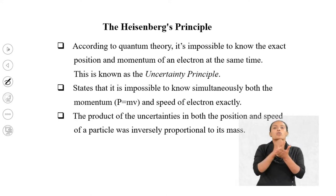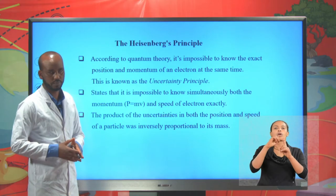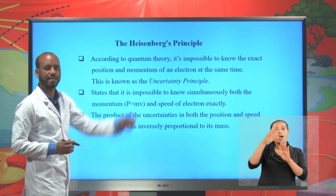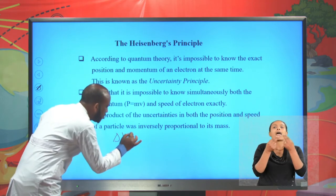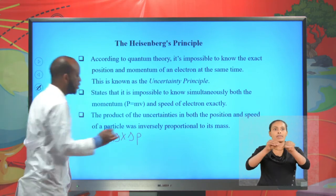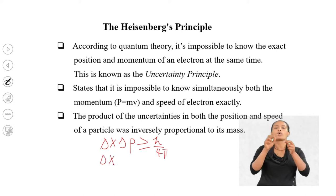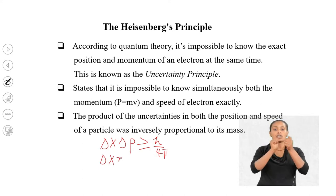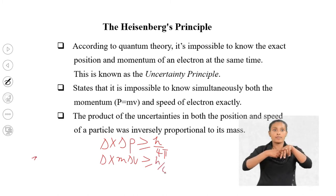The product of the uncertainties in both the position and the speed of a particle is inversely proportional to its mass. From the Heisenberg's Uncertainty Principle: Δx × Δp ≥ h / (4π), and since momentum p = mv, this becomes: Δx × m × Δv ≥ h / (4π).